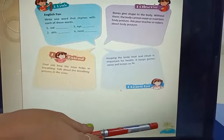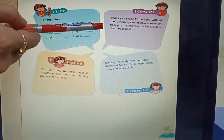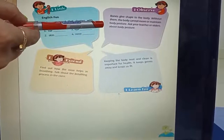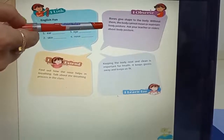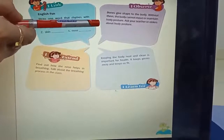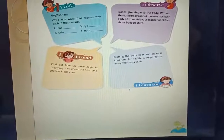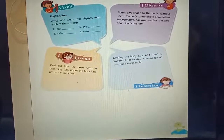Now I will give you the Home Assessment — I Observe section. Take out your course book, page number seven. Let's discuss the paragraph: bones give shape to the body; without them the body cannot move or maintain body posture. Ask your teacher or elders about body posture. Students, you all have to find out about good body posture and find out the meaning of posture. We will discuss this section in the next class. Today's session is over. We will meet tomorrow. Take care. Bye-bye.